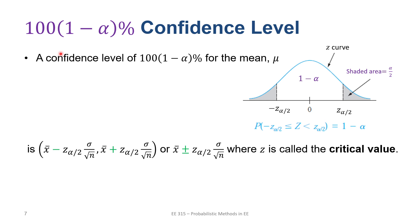Now let's generalize beyond 95 percent to the 100 times (1 minus alpha) percent confidence level. Alpha controls the percentage of confidence: if alpha equals zero we have 100 percent confidence, if alpha equals 0.5 we have 50 percent confidence. To estimate the mean mu at a confidence level of 100(1 minus alpha) percent, we control alpha and find the corresponding z value such that the shaded tail areas are each alpha over 2, leaving 1 minus alpha in the middle.